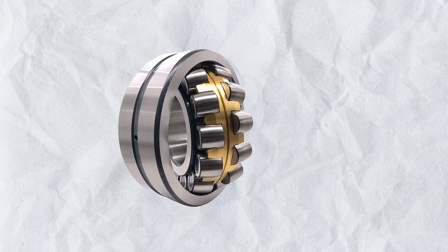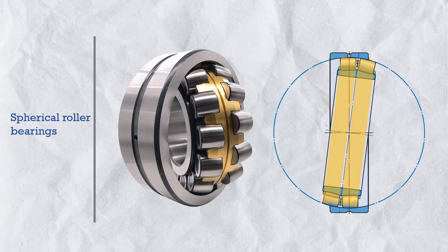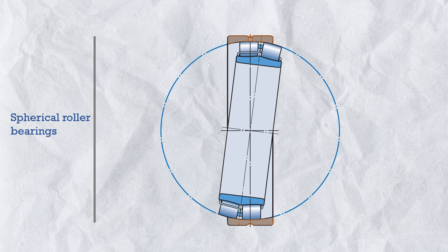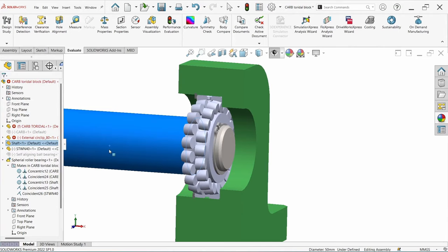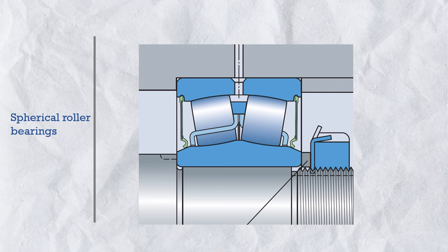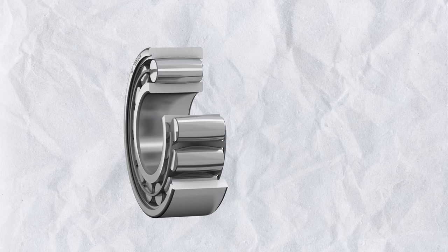The next bearing is the spherical roller bearing. It has two rows of symmetrical spherical rollers — not cylindrical — with a common sphered outer ring raceway. Like the self-aligning ball bearing, it can accommodate both static and dynamic misalignment, but it can additionally handle heavy radial loading as well as axial loading in both directions.